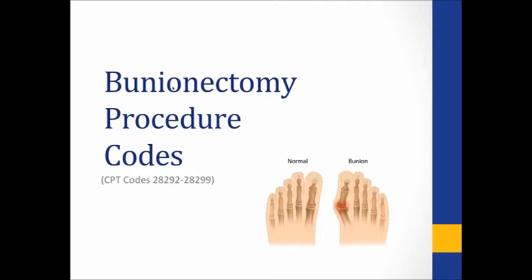We're going to start off with the easy one. The very first code covers that bony protrusion called the medial eminence, shown in red on the right-hand side. You'll hear where they take the bone cutter and shave that off, along with soft tissue removal — they clean that bump up. That's a simple bunionectomy, and that procedure is embedded in all the other codes underneath there. When they start doing osteotomy, you go into the more involved codes.